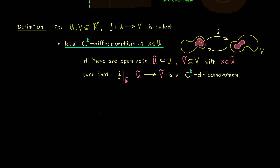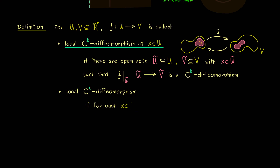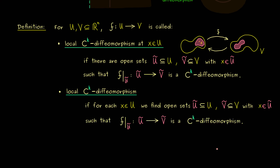However, as already mentioned, often we want this to work at every point x. This leads to the next definition: f is simply called a local C^k diffeomorphism if the above works for every x in U. In short, it's a local C^k diffeomorphism at x for every x in U. For each such x we find the required open sets U-tilde and V-tilde for which the restriction is a C^k diffeomorphism.